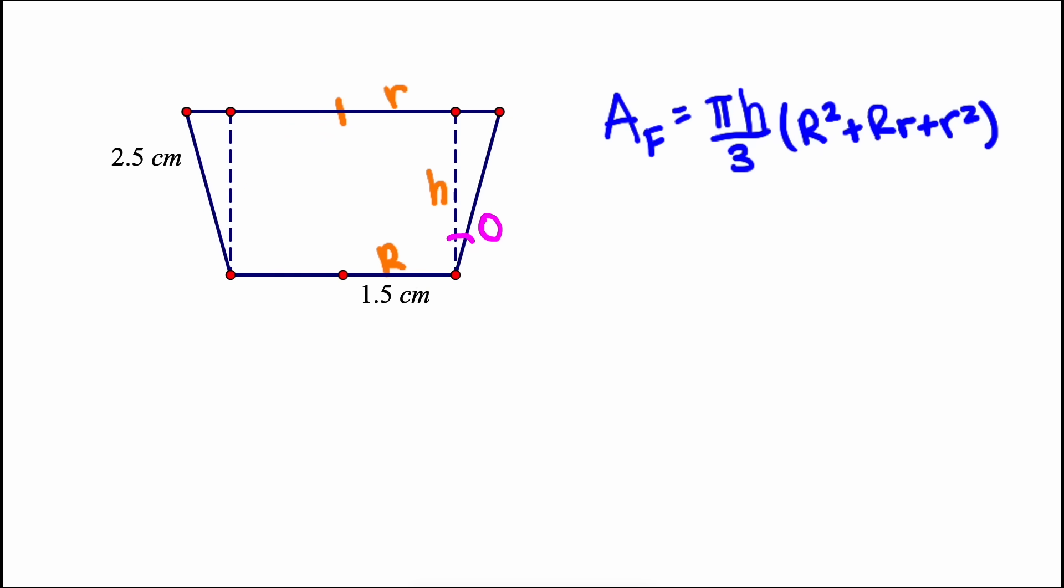I'm going to define the angle theta as this angle here. So theta is zero when the sides are perpendicular to the base, and 90 degrees, or pi-halves radians when the sides are parallel to the base. Drawing this triangle, we can now use trig functions to get the height of the cup at a given theta, and the rim radius at a given theta.